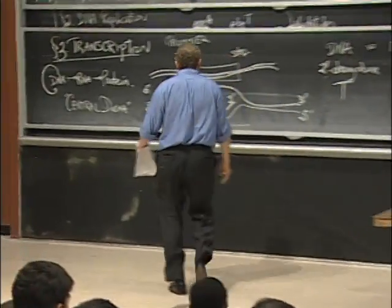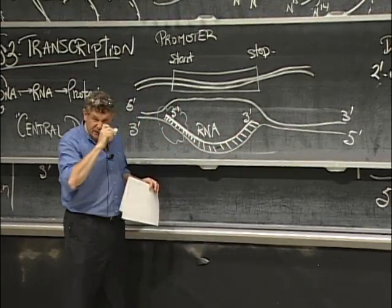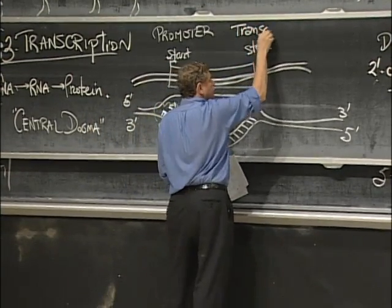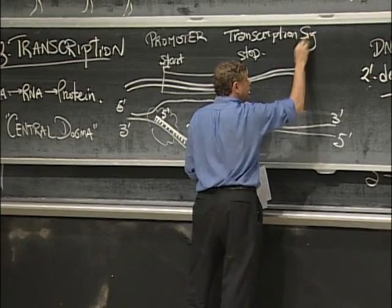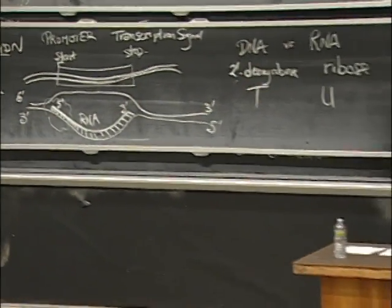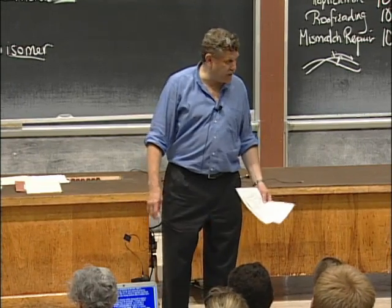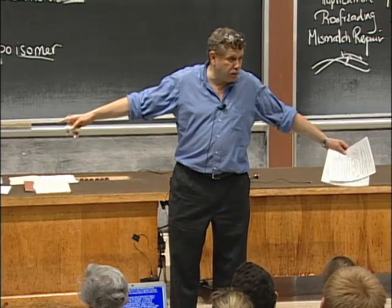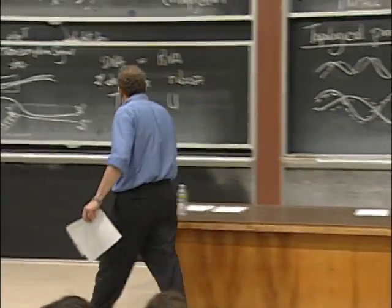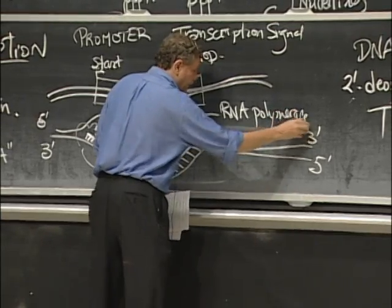So this enzyme comes along and it copies a segment of the DNA, starting at a promoter. It knows which strand it's on — it has a directionality to it. And it reaches what's called a transcriptional stop signal, which is a certain sequence in the DNA, and it comes to an end. It makes an RNA transcript, which then floats away, and which we'll talk about next time gets translated into a protein. It takes RNA nucleotides with their triphosphates and sticks them on, just like we saw with DNA, and it makes a polymer of RNA. The enzyme is called RNA polymerase. RNA polymerase comes along and does that.